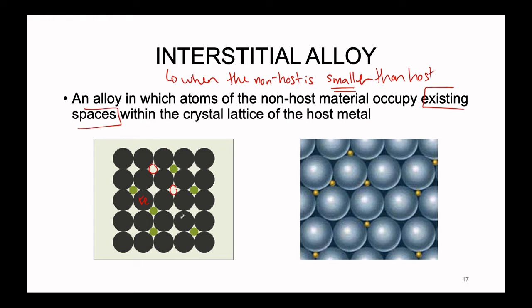Returning to our example of stainless steel, all of these grays we would consider to be the iron, and each of these little greens we would consider to be carbon. Carbon is a non-metal — it is significantly smaller than iron. So we would assume, because carbon is significantly smaller and is not near iron on the periodic table, that it's going to make an interstitial alloy in this case. We can see all of these little yellow blips representing our non-host material just fitting right inside those tiny little spaces in between the host.